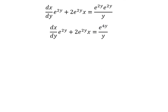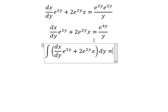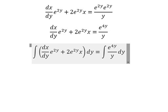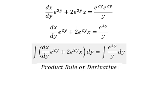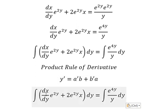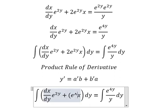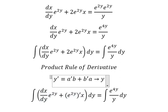Next, we integrate both sides. We can use the product rule for differentiation, where the first derivative of y equals the first derivative of a multiplied by b, plus the first derivative of b multiplied by a. Applying this, the interaction of this gives us y equals a times b.